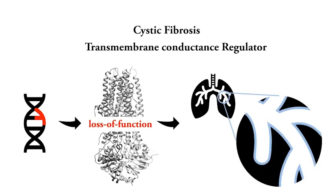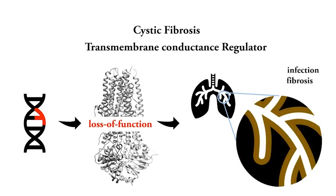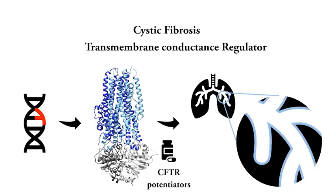In CF patients, dysfunction of CFTR results in thick and sticky airway mucus, which leads to persistent lung infection and fibrosis that limits the patient's ability to breathe. In a subset of CF patients, the function of mutated CFTR can be partially restored by drugs known as CFTR potentiators.